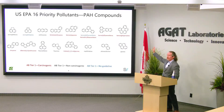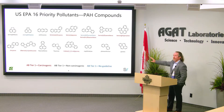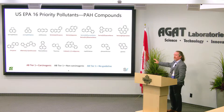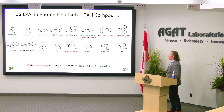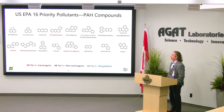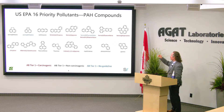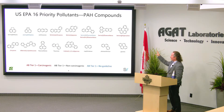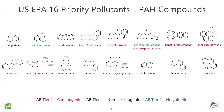These are your polycyclic aromatic hydrocarbons — poly, meaning multiple; cyclic, they've got these rings; aromatic, they're aromatic benzene rings for the most part. That's the polycyclic aromatic hydrocarbons.